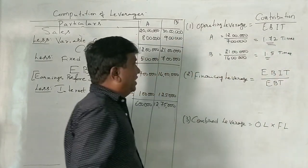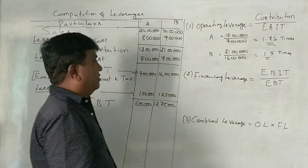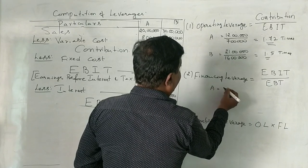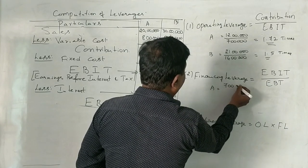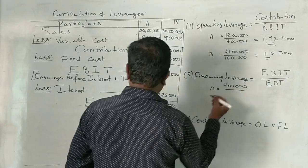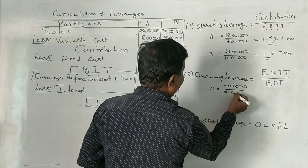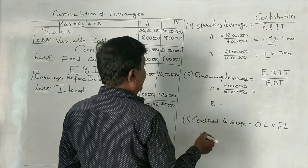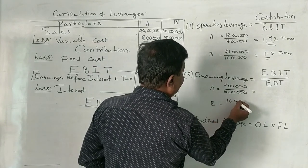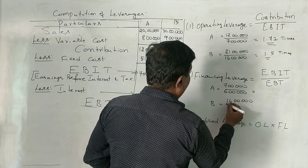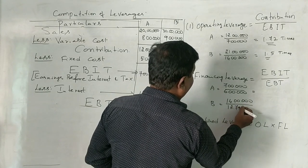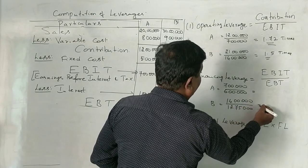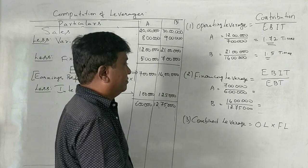Now let us understand financial leverage. Firm A, EBIT is 7 lakhs and EBT is 6 lakhs. Firm B, 14 lakhs is the EBIT and EBT is 12,75,000. Tell me how much? 1.16, sir. 1.16.